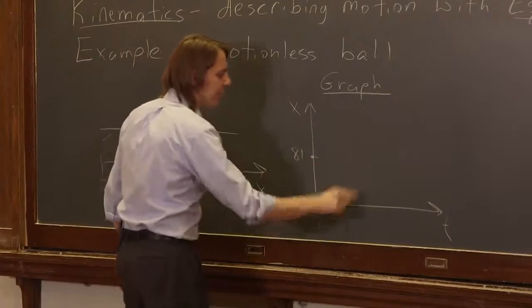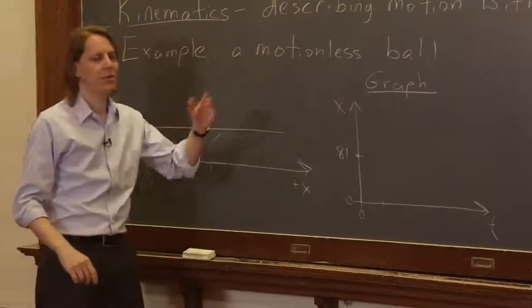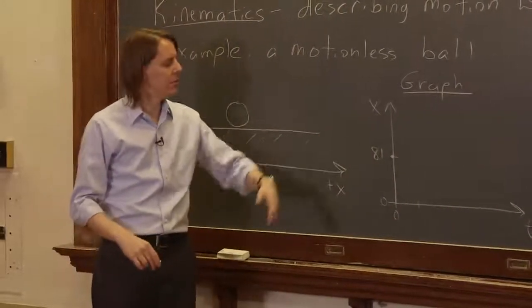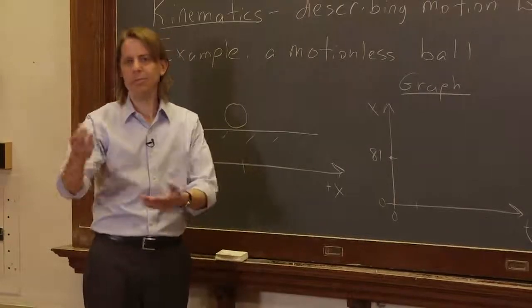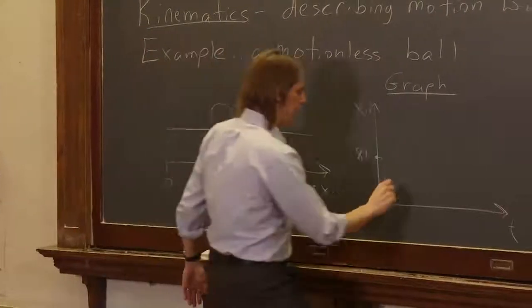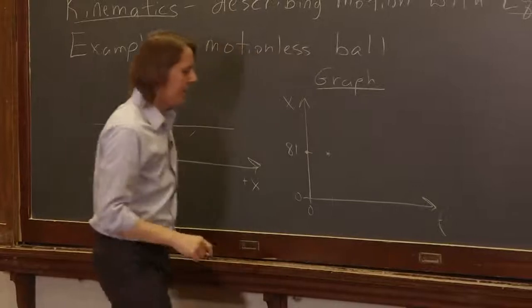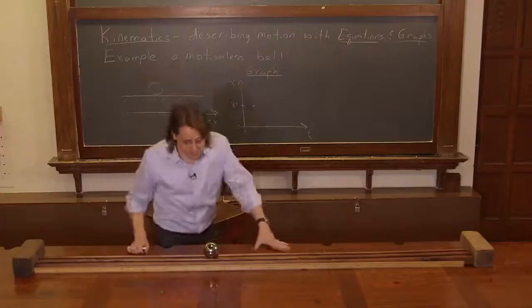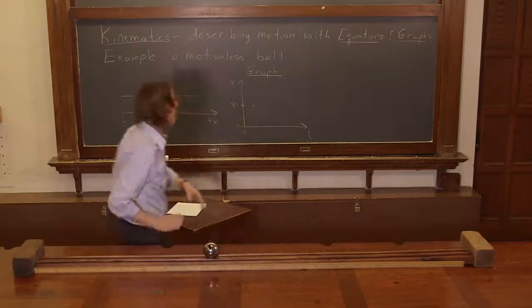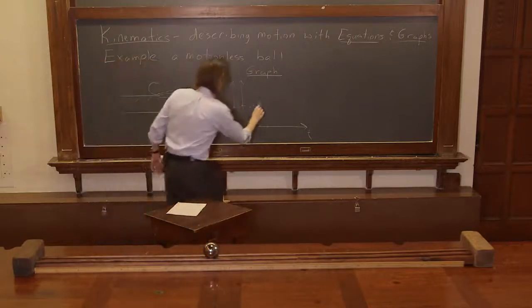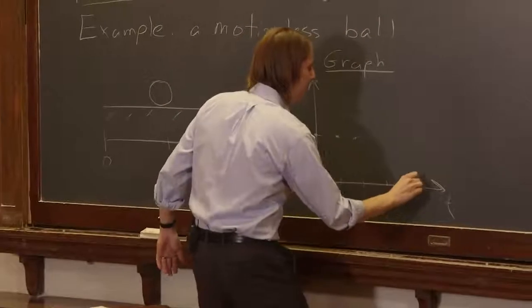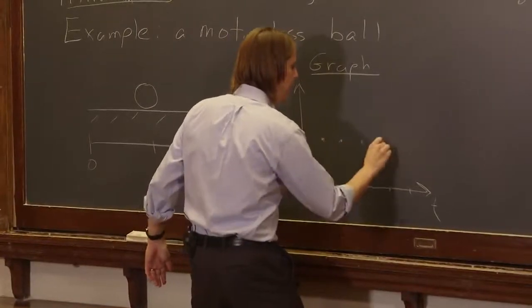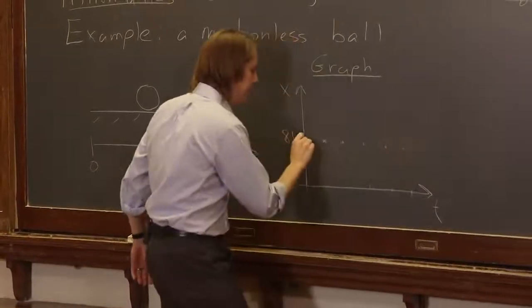So now, if we wait to some later time, say when I read it was 81, now 10 seconds later, what is it? Well, it's still 81. So we could put another point there. And we could wait a little bit longer. And we could say, well, maybe I should check because it moved. If it's motionless, it better not have moved. Still 81. So as long as we check it, it's going to be 81 at every time. And if we were to fill in a lot of those points, it would look like this.